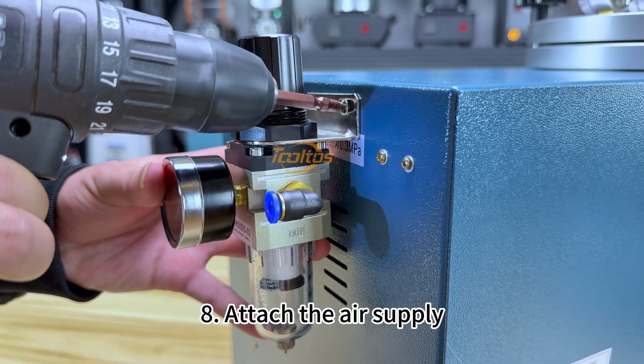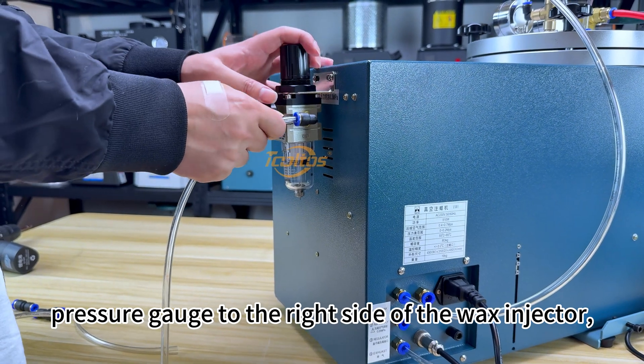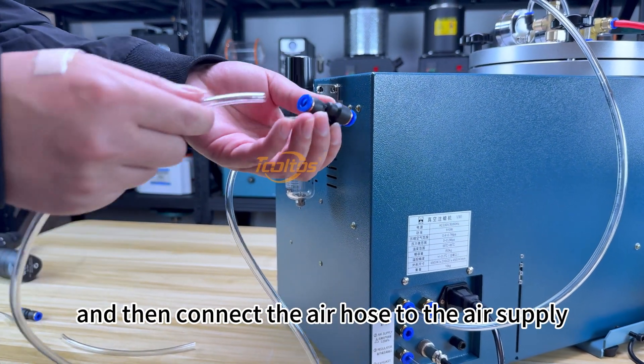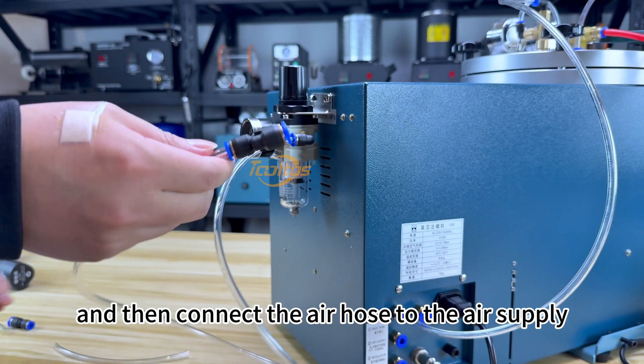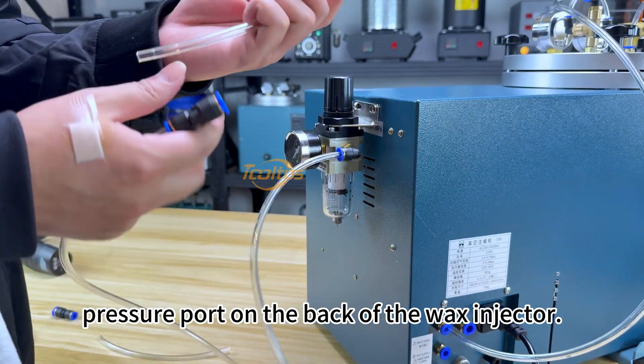8. Attach the air supply pressure gauge to the right side of the wax injector. Connect the air compressor, then connect the air hose to the air supply pressure port on the back of the wax injector.